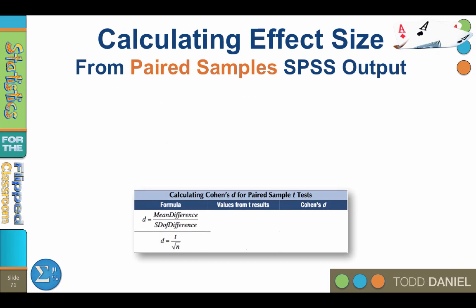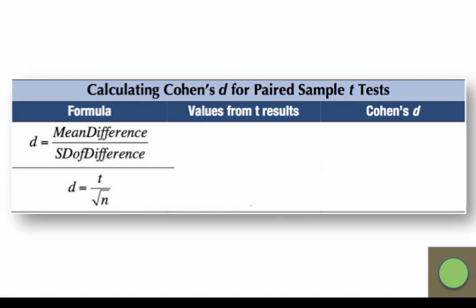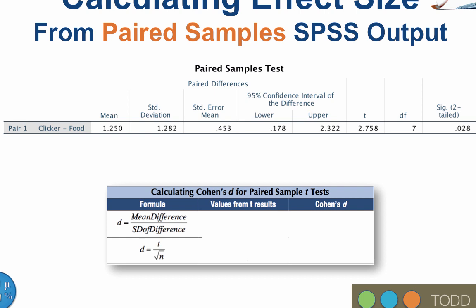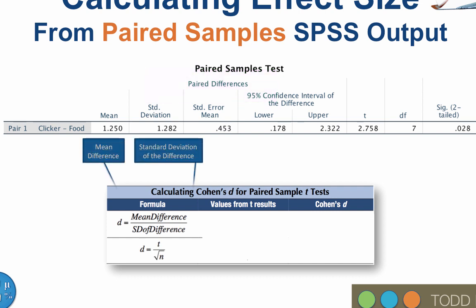Calculating an effect size from paired samples SPSS output is simpler. There are two formulas that we could use, and I have included both of them here. We get the output for our paired samples test. All of these descriptives are for paired differences, so the mean difference is 1.25 and the standard deviation of the difference is 1.282. Alternatively, we can use the t value and the sample size. Plug in the values to either formula and use the PEMDAS technique to solve the equation. Either way, we get a Cohen's D of 0.98.